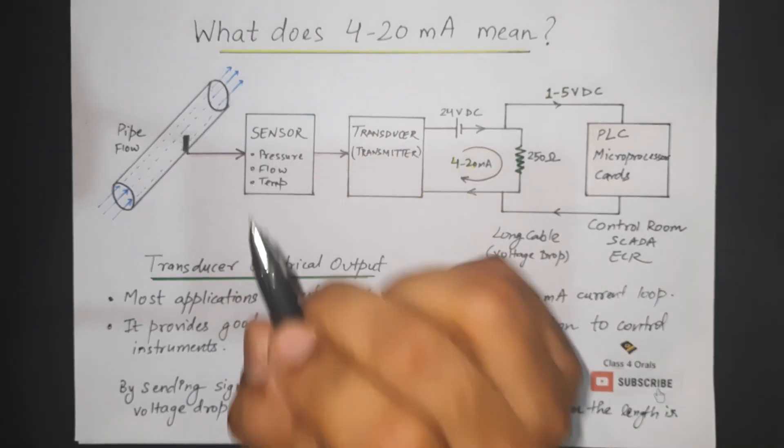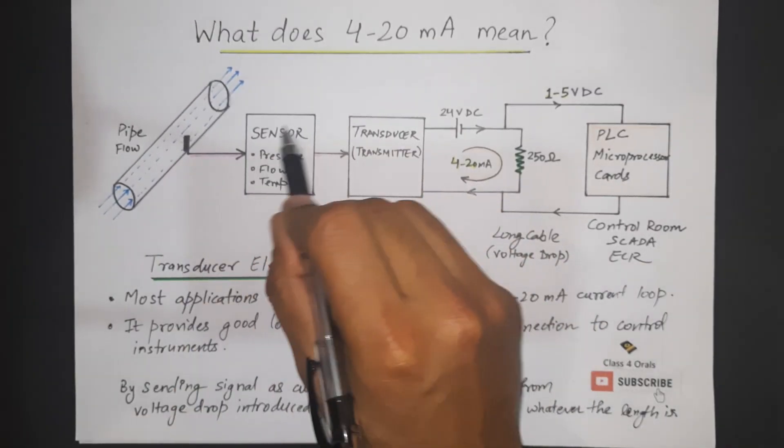It is going to sense either pressure, flow, or temperature or any other parameter. Currently, we are focusing on the pressure. Let us suppose we are going to measure the pressure. So this sensor is going to sense the pressure.